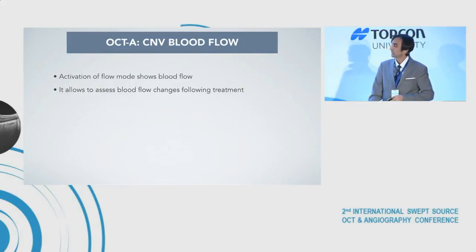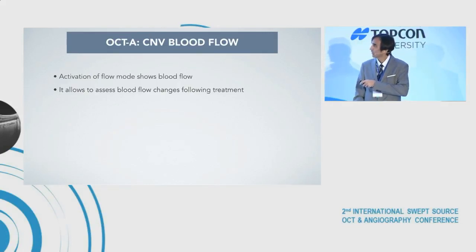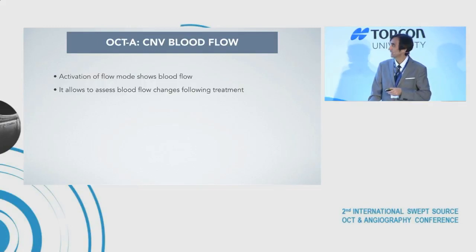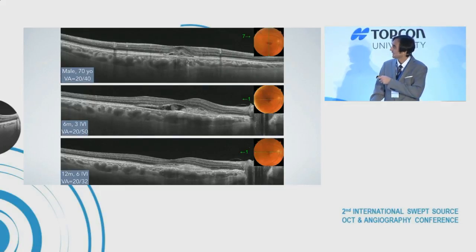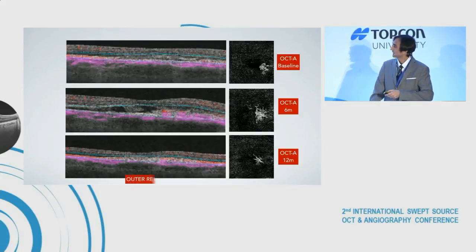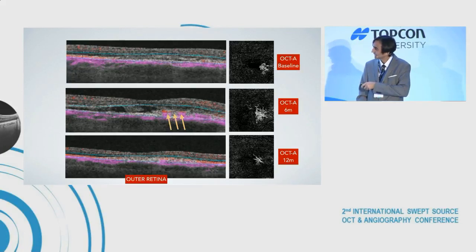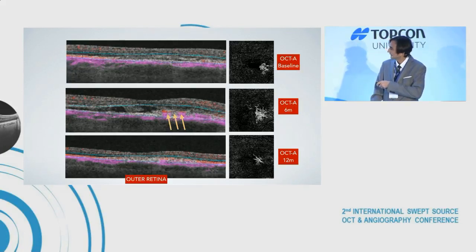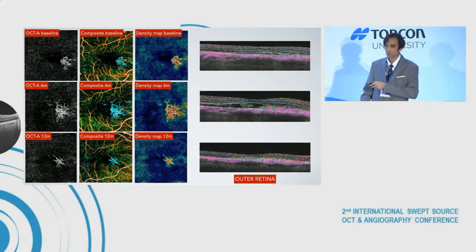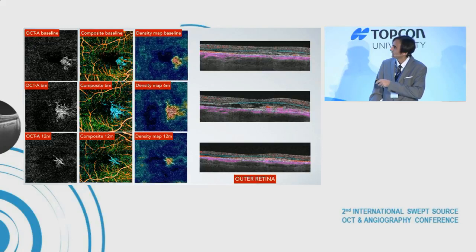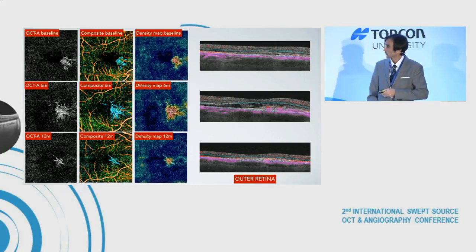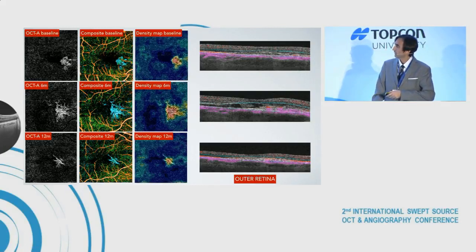Furthermore, OCT angiography can be very helpful to assess blood flow with the activation of flow mode, which allows assessment of blood flow changes following intravitreal therapy over time. In this case — baseline, six months, 12 months — we can see at the six-month follow-up a clear enlargement of the lesion and an increase in the blood flow signal accompanying this enlargement. The reconstruction of this case using the OCT composite image and the density map can be complementary, giving us additional information beyond the regular OCTA.